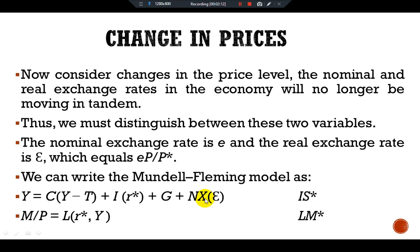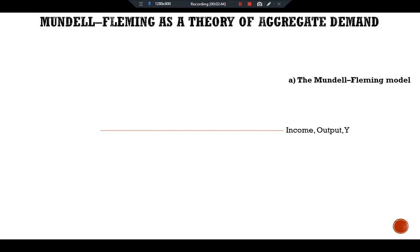Now let's discuss the graphical presentation of the Mundell-Fleming model as a theory of aggregate demand. We have two panels. The first panel is the Mundell-Fleming model, where income/output Y is on the x-axis, the real exchange rate is on the y-axis, we have a vertical LM*(P1) curve, and a downward-sloping IS* curve.